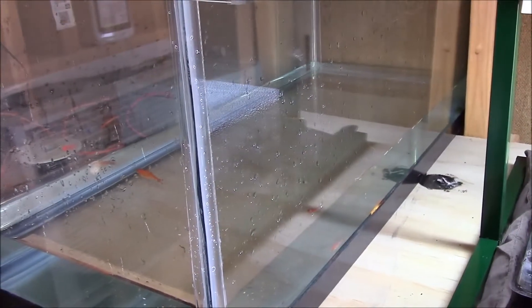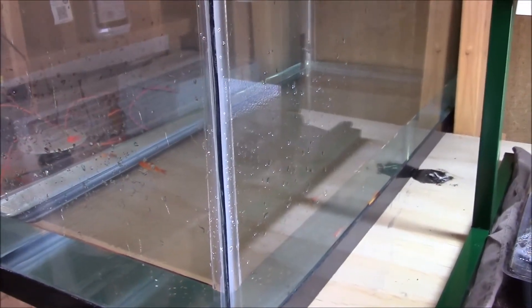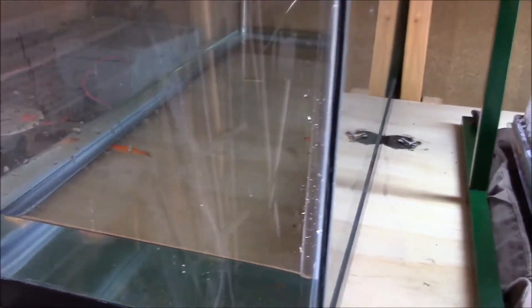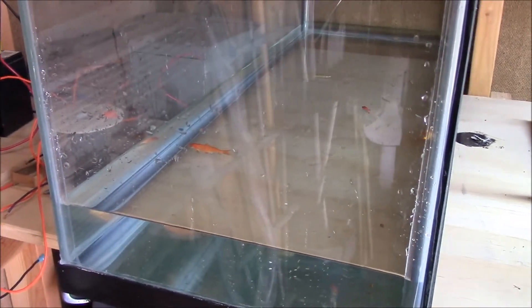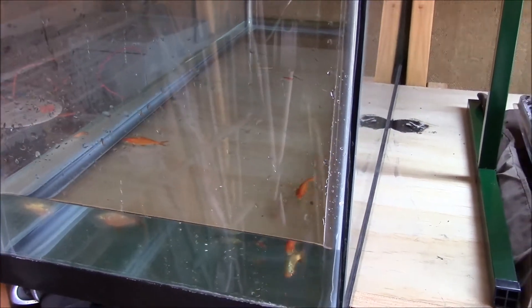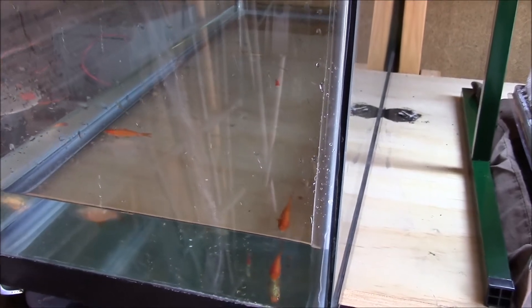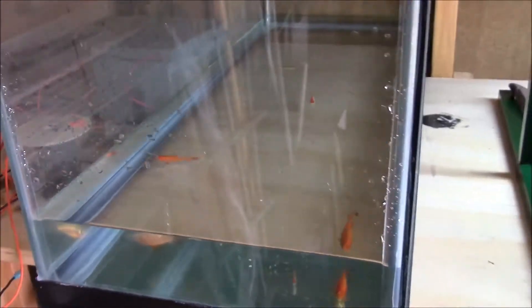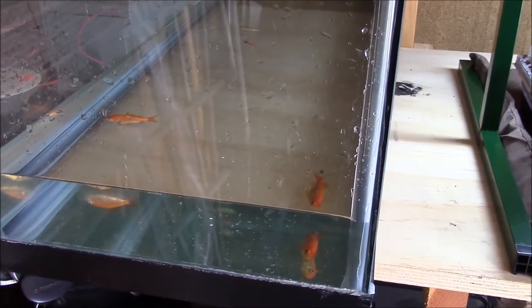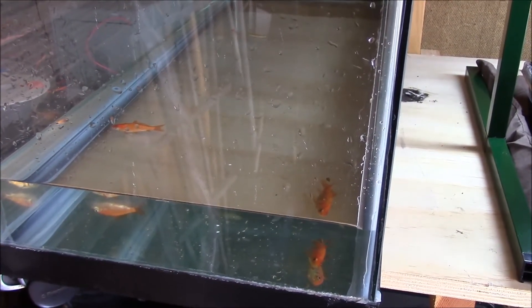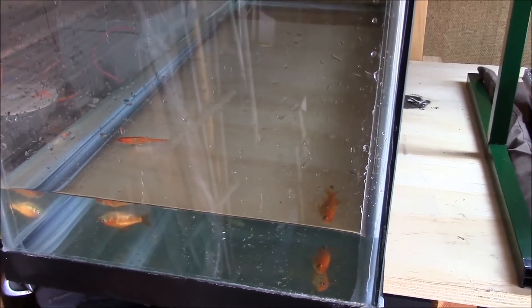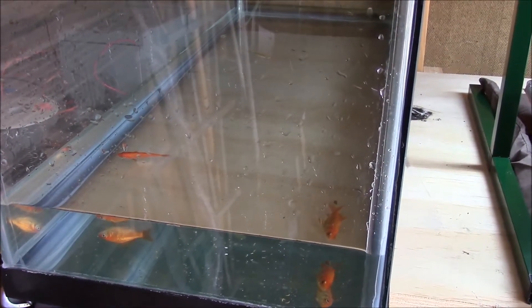So I got this idea from the old mining days, coal mining days or whatever, where they would take canaries down into the mine with them. If the canary passed out, they would know that there's carbon monoxide or something harmful down there that they need to get away from. So these fish should be able to pretty quickly tell me if this water is super toxic or not. And like I said, we'll check back in a couple days and see what's happened.